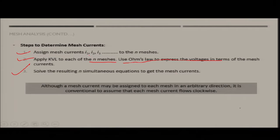Although a mesh current may be assigned in an arbitrary direction, it is conventional to assume that each mesh current flows in a clockwise direction. The actual direction will vary, and whenever you get the value of current, if the value is negative the direction will be reversed; if positive, your assumed direction is correct.